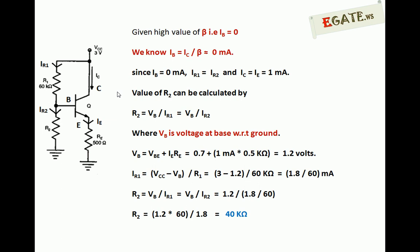This type of question will appear more frequently in GATE, so this is very important. High value of beta means beta will be taken as very large, which indirectly means you can easily neglect the base current. High value of beta means IB equals zero. We can prove this: IB equals IC by beta, but beta is very large, so IC by beta approximately equals zero, so IB will become zero milliampere.